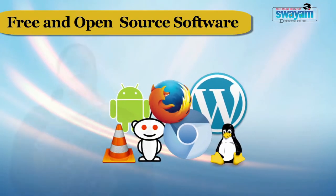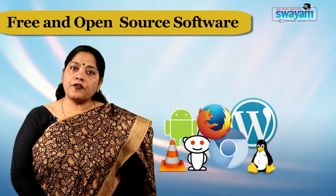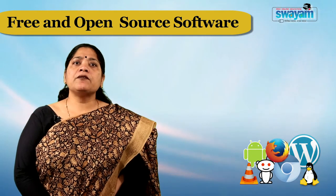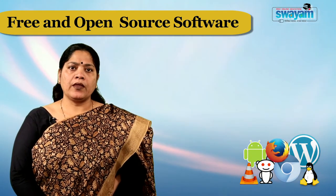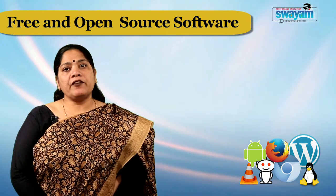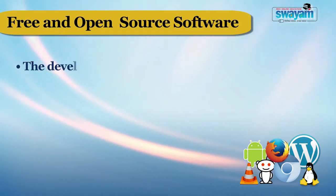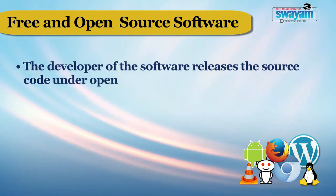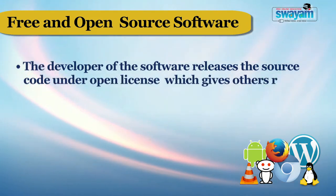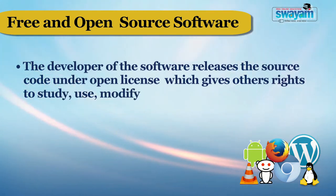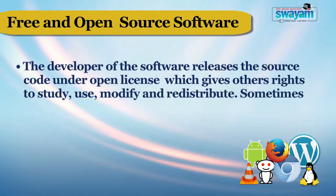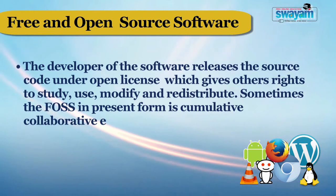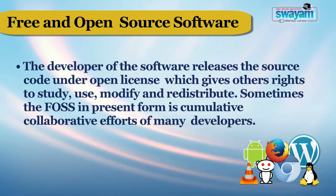The other category is free and open source software, which is like freeware as it is freely available, but in this case the source code is made available to anyone who is interested. It is like a recipe of a dish which anyone can modify. The developer releases the source code under an open license, which gives others rights to study, use, modify and redistribute. Sometimes, free and open source software in its present form is a collective collaborative effort of many developers over a period of time.